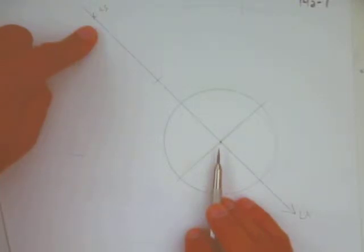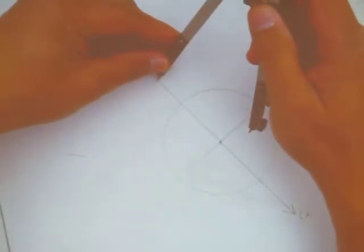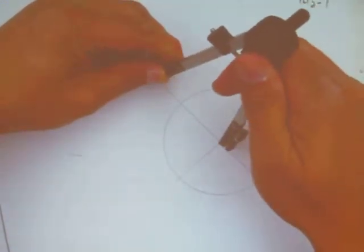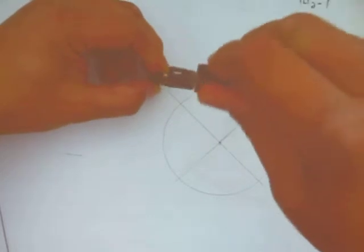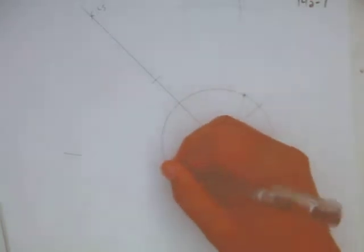Alright? Now watch. This is cool. I put the compass on the midpoint, I turn it to the center and I go like this. Those are the tangent points. Geometry is crazy. Cool.